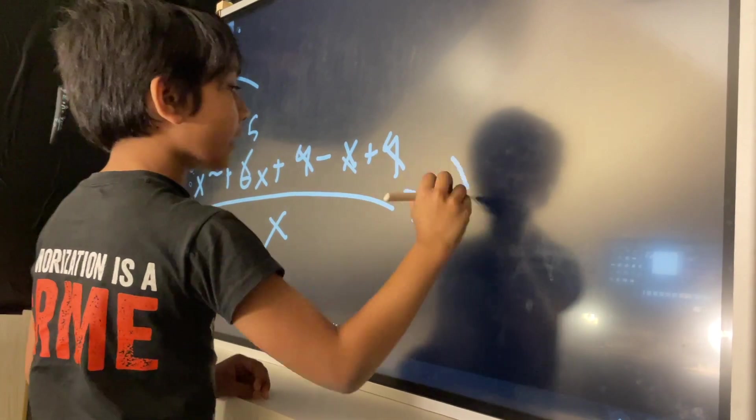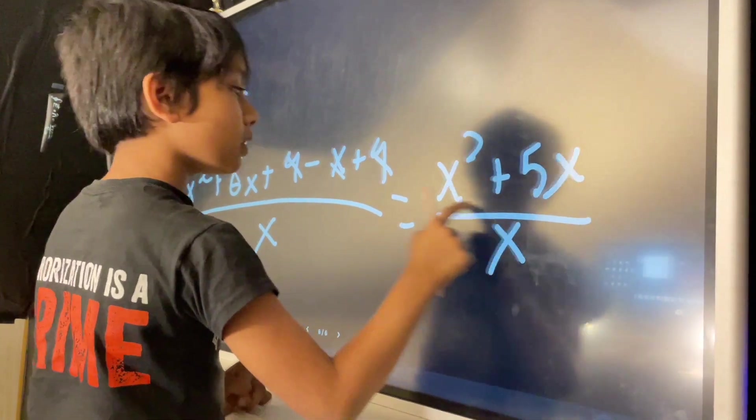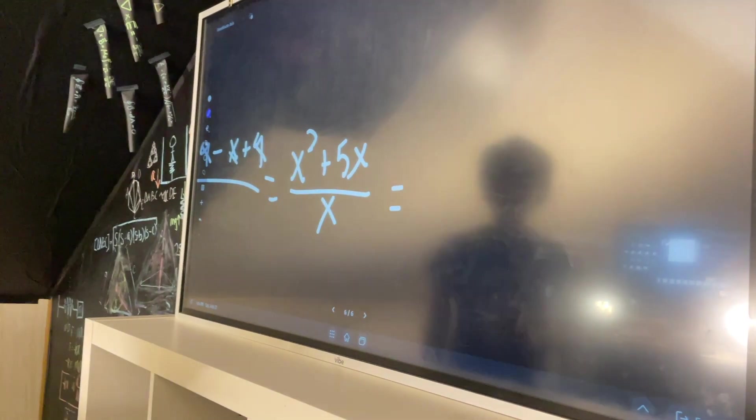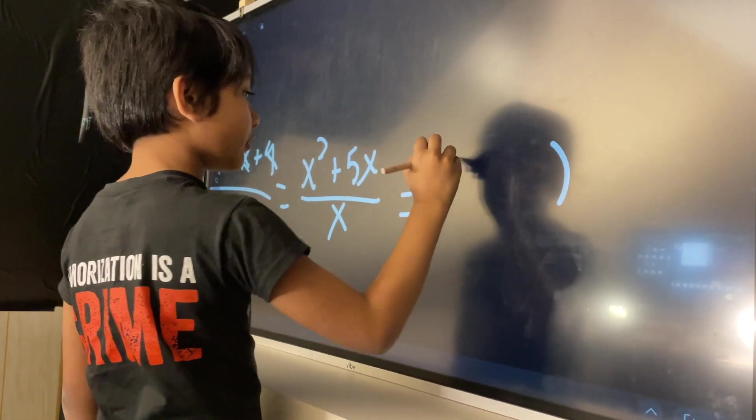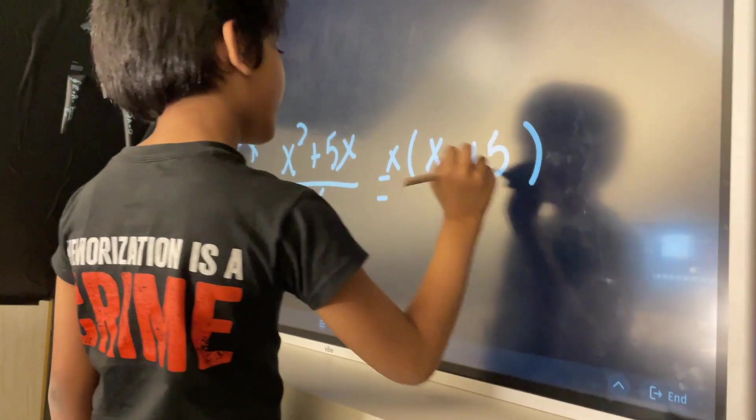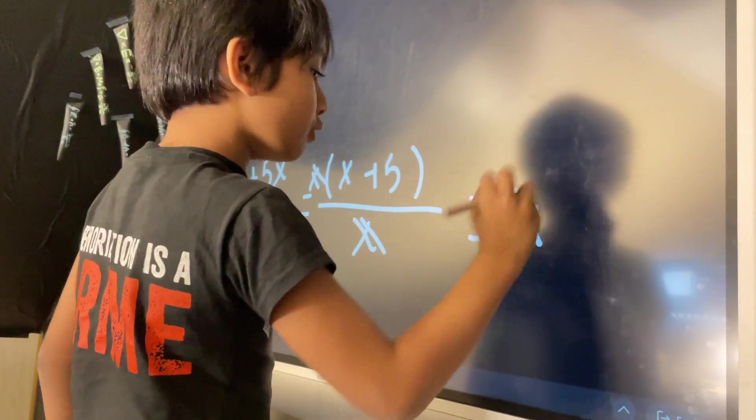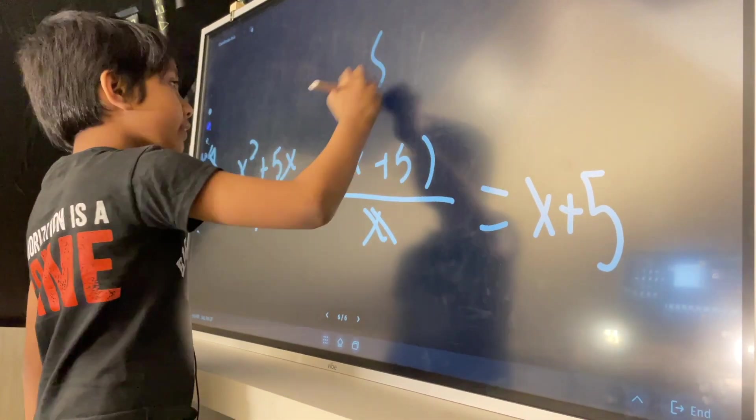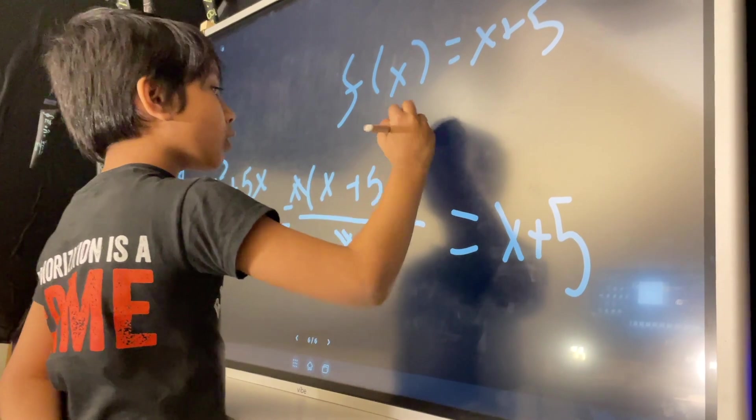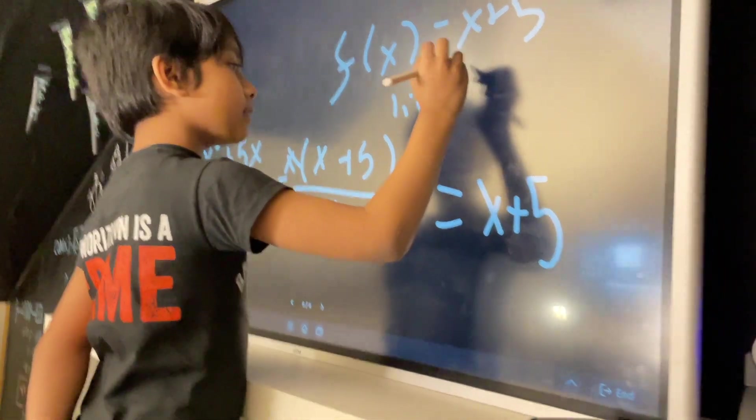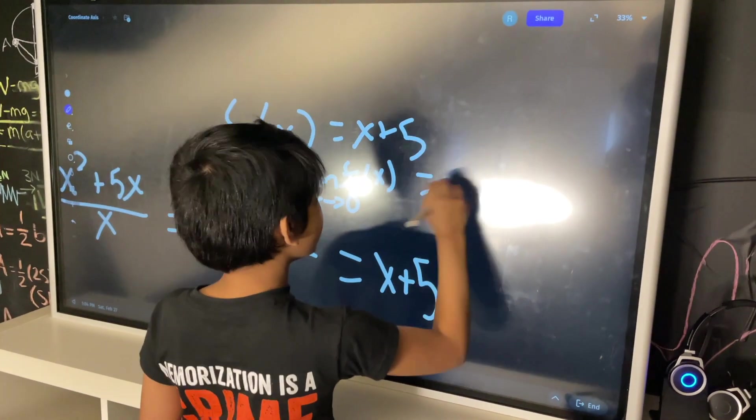So, that gives you x squared plus 5x over x. You can factor x squared plus 5x. You can factor x out of x squared plus 5x to get x times x plus 5 over x. These two cancel out, thus giving you x plus 5. That means that since f of x is x plus 5, we can now use the normal plug-and-chug method to get the limit of f of x. If x approaches 0 is 0 plus 5 equals 5.